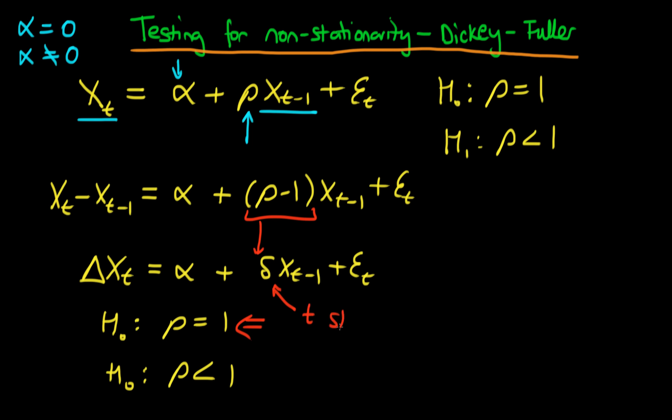A way that you might think we could do this would be to calculate an ordinary t-statistic on this delta term, or specifically on delta hat, and then compare that t-statistic with a t-distribution. Perhaps that would allow us to determine whether we had a stationary or non-stationary time series.